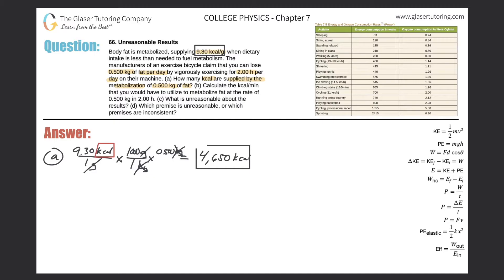That takes care of letter A. That's how many kilocalories would be supplied by half a kilogram of fat, which is about a pound of fat. Letter B: Calculate the kilocalorie per minute that you would have to utilize to metabolize fat at the rate of 0.5 kilograms in two hours. Again we can do another dimensional analysis. We're asked to calculate kilocalories per minute.